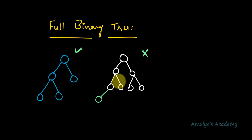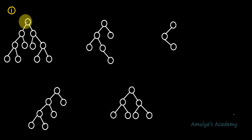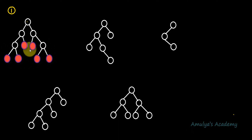To understand this better, let's look at a few more examples with 5 trees. For the first example, checking each node: the root has 2 children, the next nodes each have 2 children, and the leaf nodes have 0 children. So this is a full binary tree.